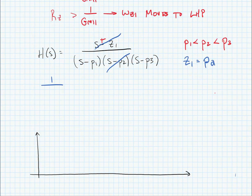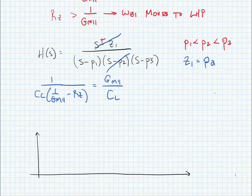We know that 1 over cc times 1 over gm2 minus rz equals omega z1. We want to set this equal to gm2 over cl. This tells us then that rz needs to be equal to cc plus cl over cc times 1 over gm2.